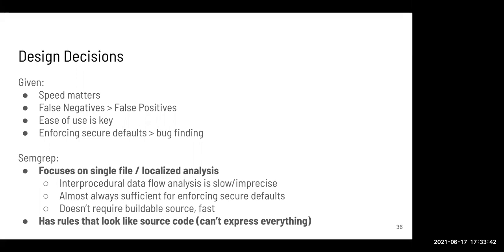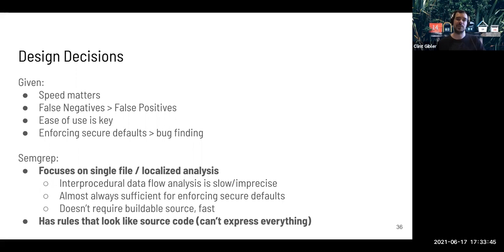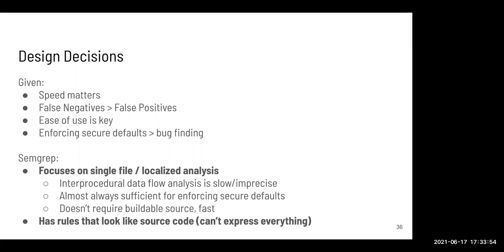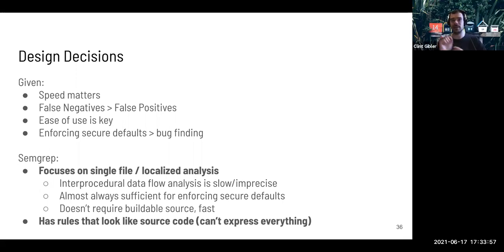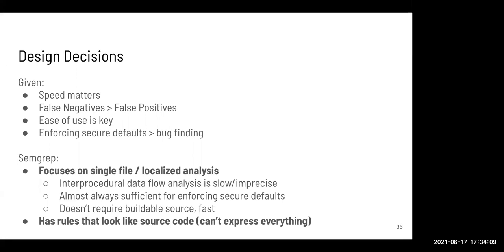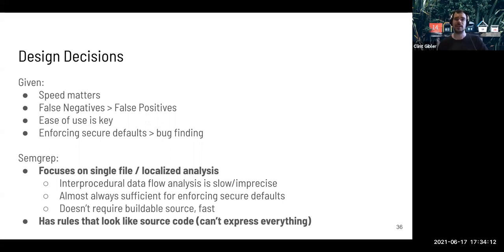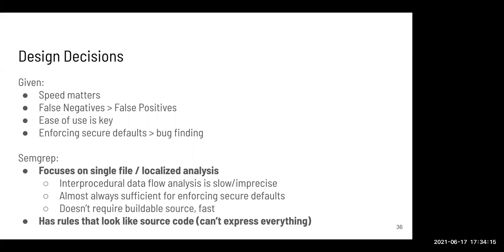Another example: if it's a financial transaction application, you might say anytime someone makes a transaction, you need to call this verify function on that transaction object first before doing that. You could codify that in a SEMGREP lint to say: if you're calling this function, make sure this property holds over one of its arguments or make sure this other API call is called first. Does that answer your question? — Yes, it's good, thank you.